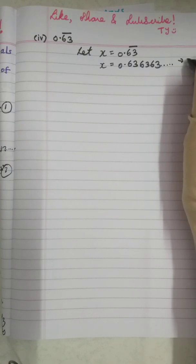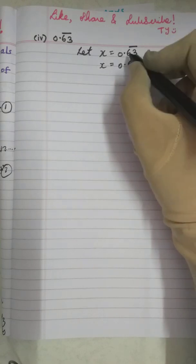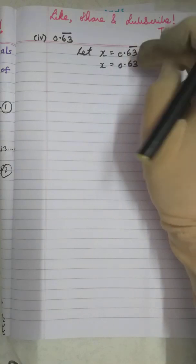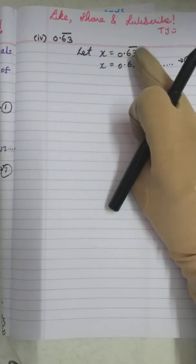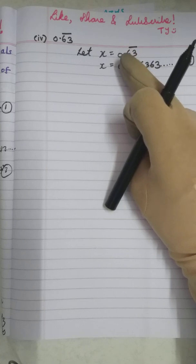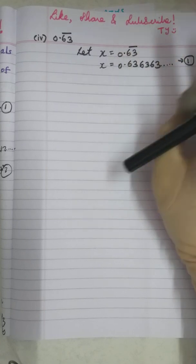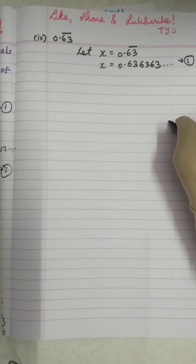That we have to write as first equation. Now we have to check for the periodicity. Here, the digits 6, 3 are 2. That is, periodicity is 2 means we have to multiply this with 100. Remember, whenever the periodicity is 2 means multiply it with 100.